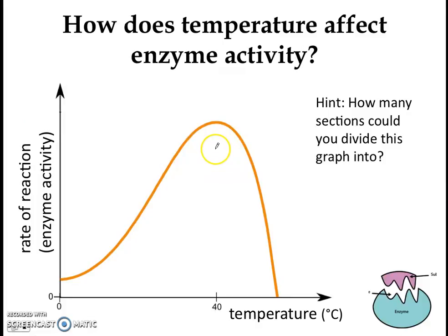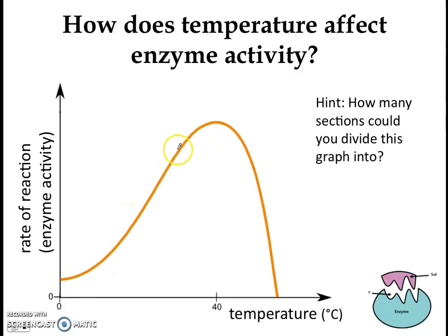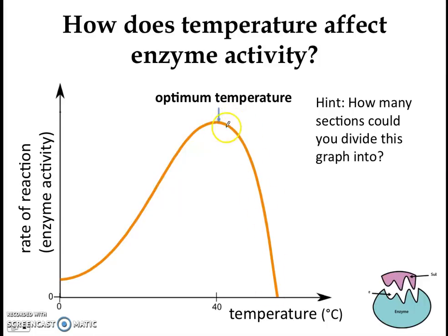We just saw an experiment measuring the rate of enzyme activity at three different temperatures. Now imagine if we measured the rate across a larger range — say from 0°C to about 60°C — and plotted a graph of rate of reaction against temperature. You would expect a graph like this for most enzymes. As temperature increases, the rate of enzyme activity increases, but it reaches a maximum at a particular temperature called the optimum temperature. After the optimum temperature, enzyme activity actually decreases.